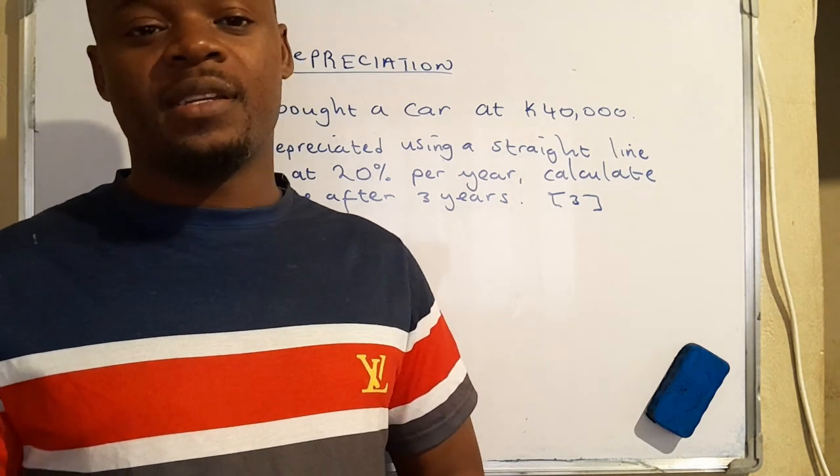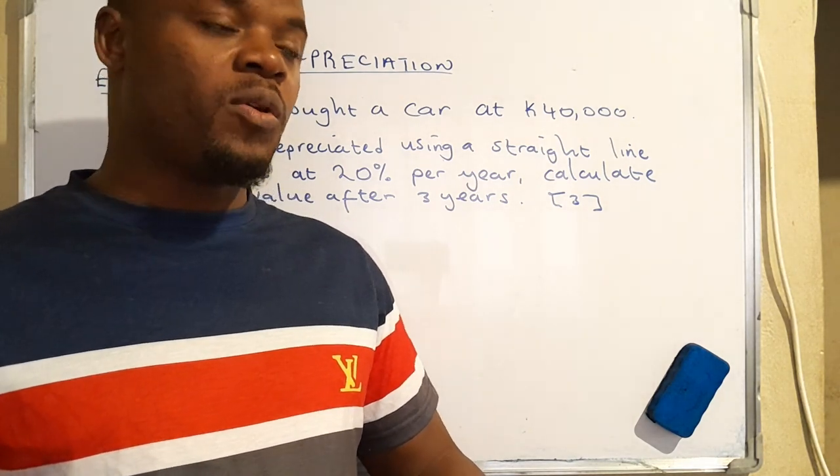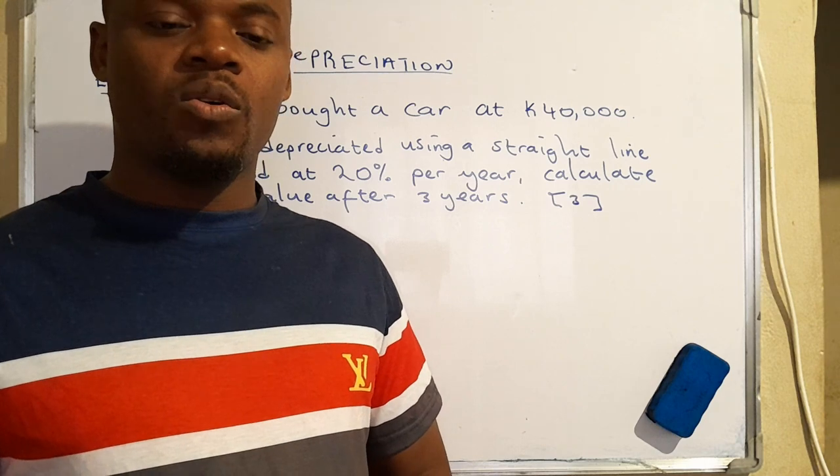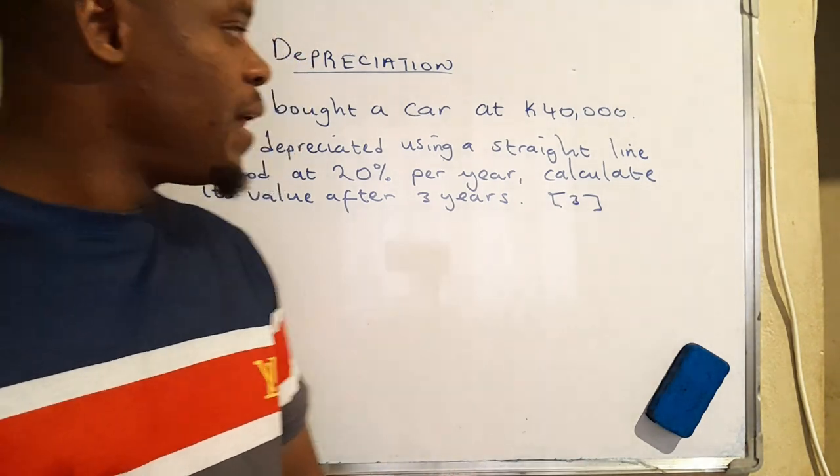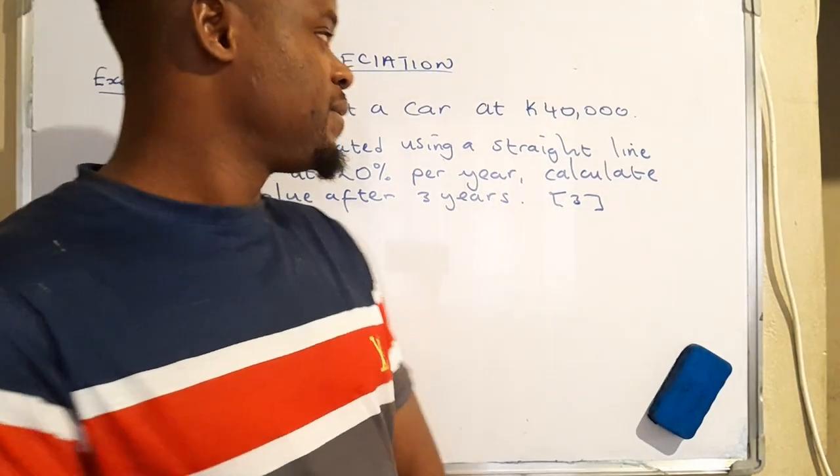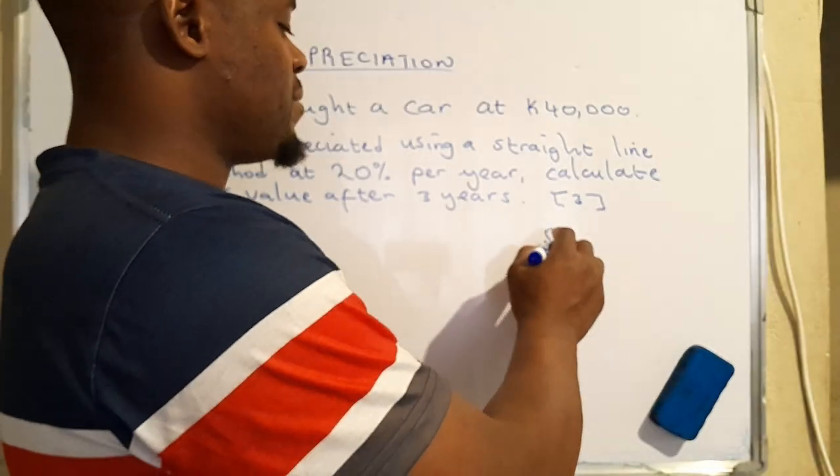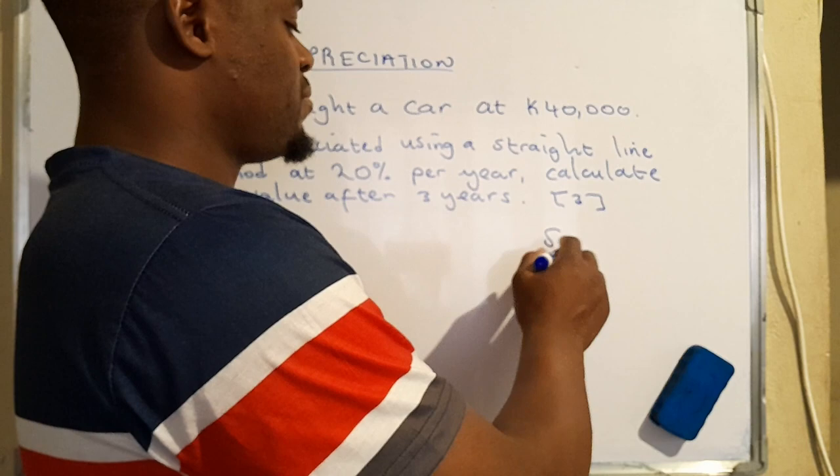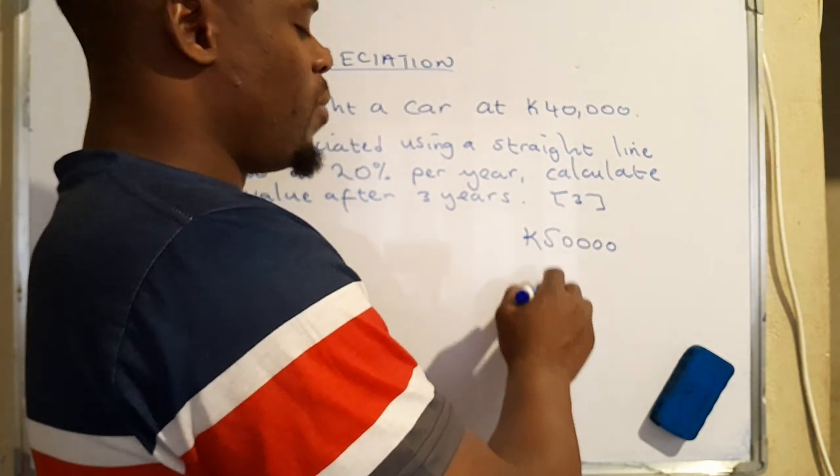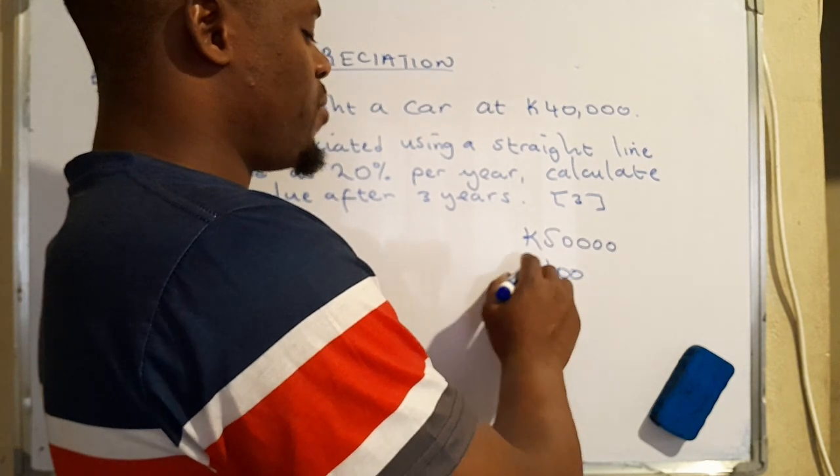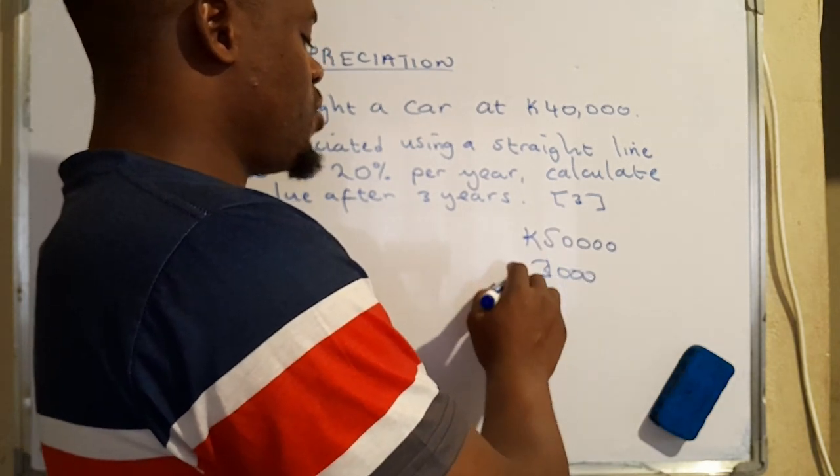A very good example that I can give of an item or an asset whose value depreciates is actually a car. If you bought a car today at let's say fifty thousand, or let's say one thousand or three thousand US dollars.